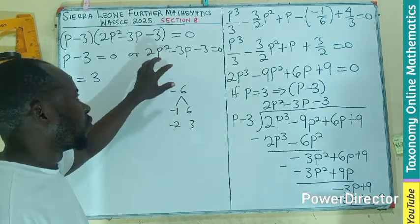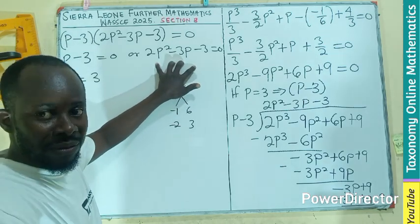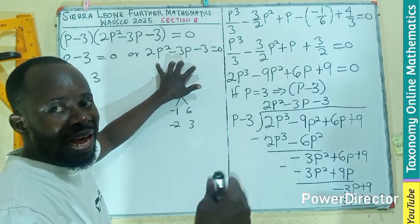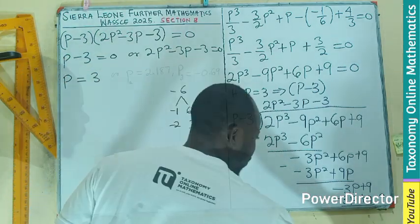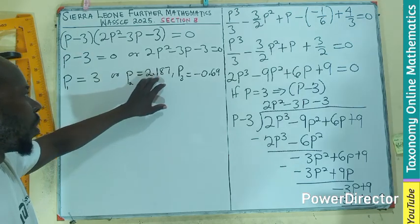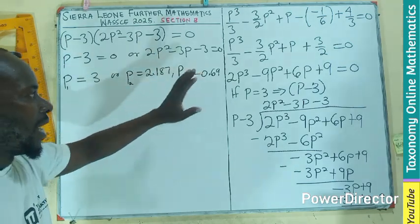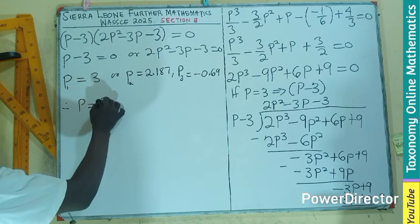I can just use calculator to get the value of p in this case, without solving it, because I know it will be a rational number. From here, if you put in the calculator, you'll be having 2.18 here, negative 0.8. Therefore, p equals 3.